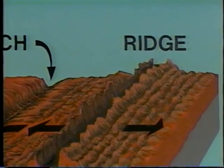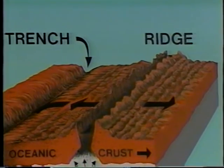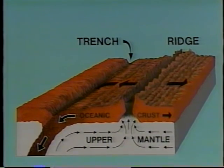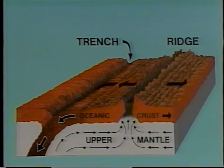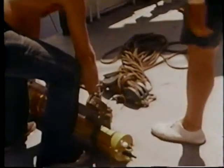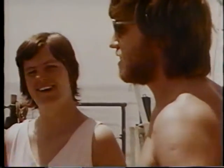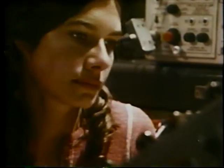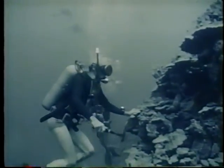Heat currents in the mantle are believed to be responsible for the spreading process. According to the theory, hot mantle material rises beneath the mid-ocean ridge, cracking the crust and creating a rift. If this is so, heat flow along the ridge should be higher than normal. To measure the amount of heat reaching the ocean floor from the Earth's interior, oceanographers use a tube containing heat sensors. This device, called a thermoprobe, is thrust into the bottom sediments. After a time, the lower sensor will read a higher temperature than the upper one. The heat flow data obtained confirmed the prediction that heat flow at the mid-ocean ridges is higher than that at continental margins, abyssal plains, and trenches.